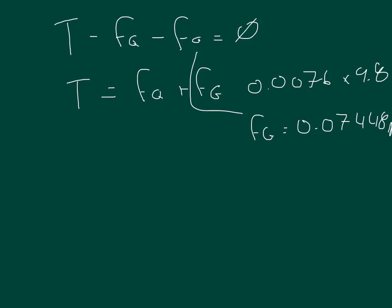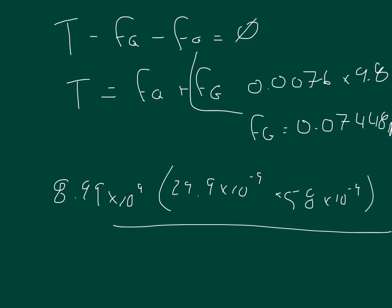And then FQ is going to be 8.99 times 10 to the 9th times 29.9 times 10 to the negative 9th times 58 times 10 to the negative 9th Coulombs, divided by, and the radius, it says, is 2 centimeters. So we'll put 0.02, and that's radius squared, meters.